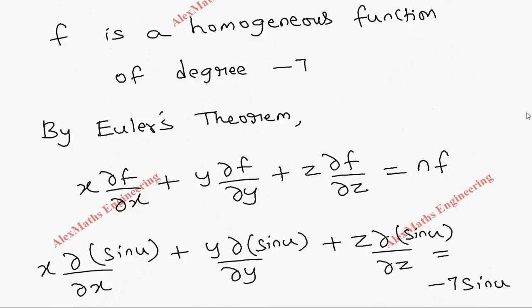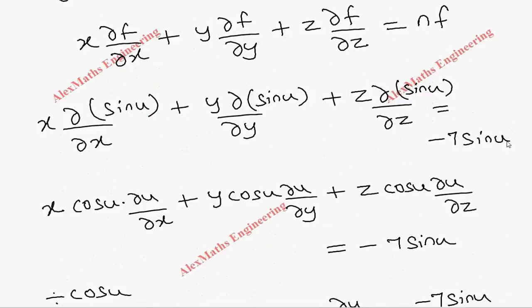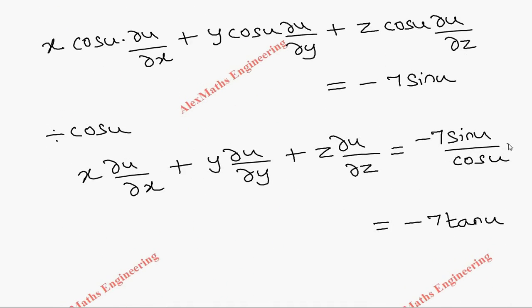So the term which we have to prove is x into ∂u/∂x plus y into ∂u/∂y plus z into ∂u/∂z equals minus 7 tan u, which we proved using Euler's theorem.